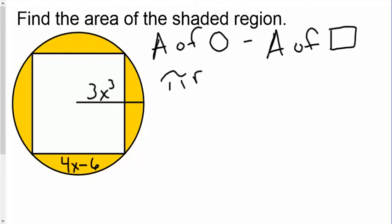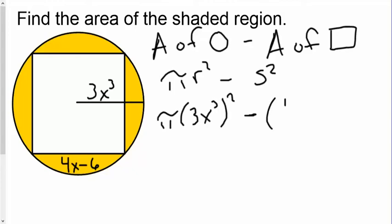I'm going to set it up as pi r squared minus my side length squared. I know my radius here is 3x cubed, so it's pi times the quantity 3x cubed, that whole thing squared, minus the binomial 4x minus 6, that quantity squared.